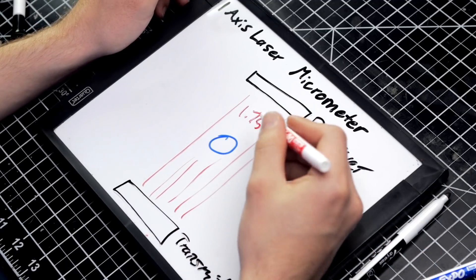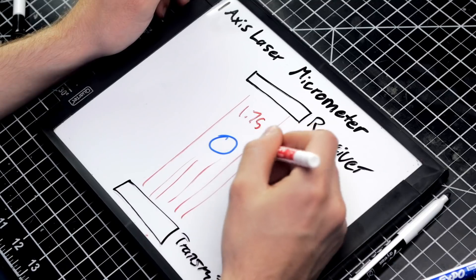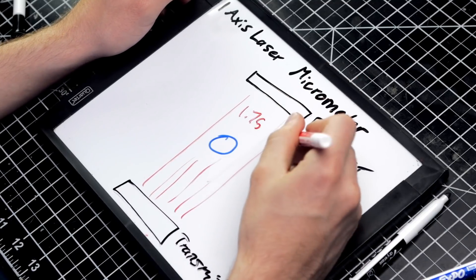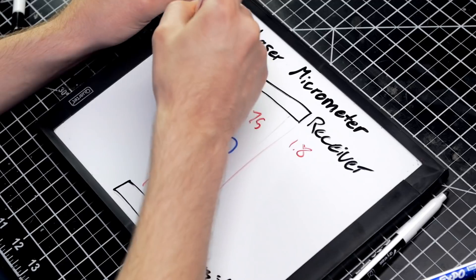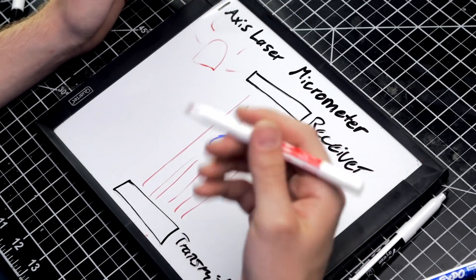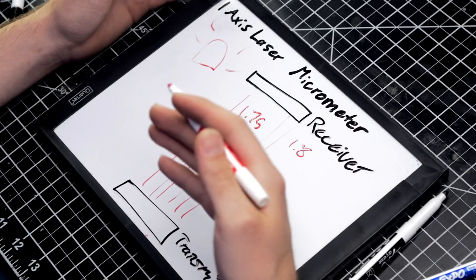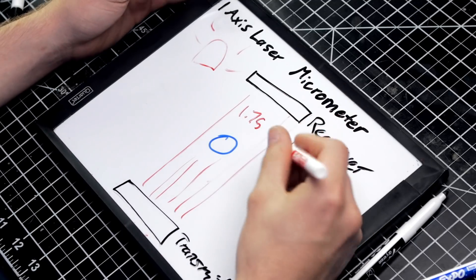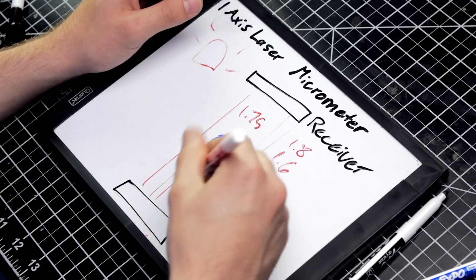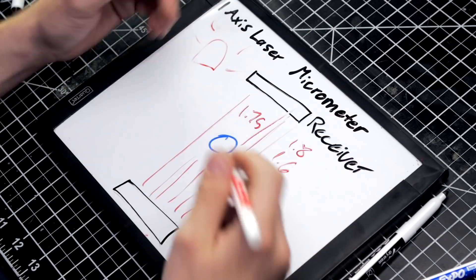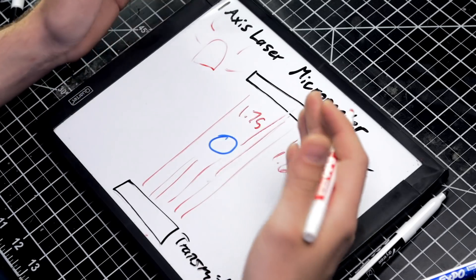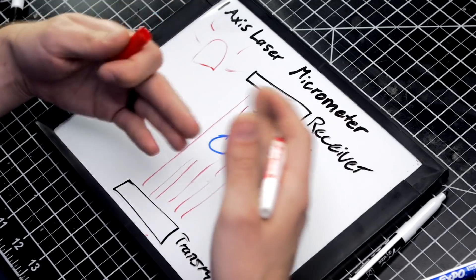If the filament diameter starts getting too far in one direction, it starts blocking the laser and detects 1.8mm — the alarm will go off saying the filament is out of spec and you need to double check it. It'll do the same if the filament comes out as 1.6mm, letting too much light pass through, and the alarm will trigger to indicate something is wrong.